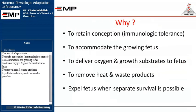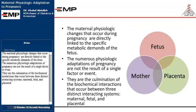The aim of adaptation is to retain conception and immunologic tolerance, to accommodate the growing fetus, to deliver oxygen and growth substrates to the fetus, to remove heat and waste products, and to expel the fetus when separate survival is possible. The maternal physiologic changes that occur during pregnancy are directly linked to the specific metabolic demands of the fetus.